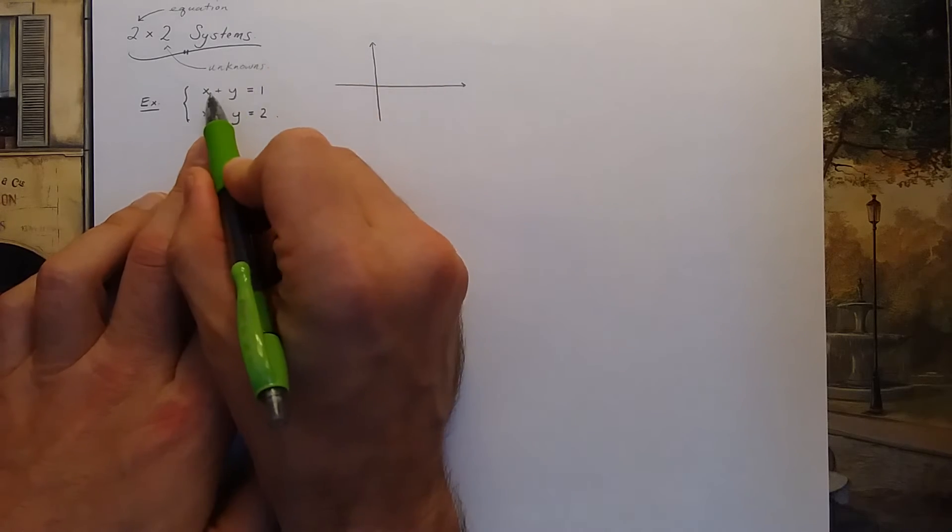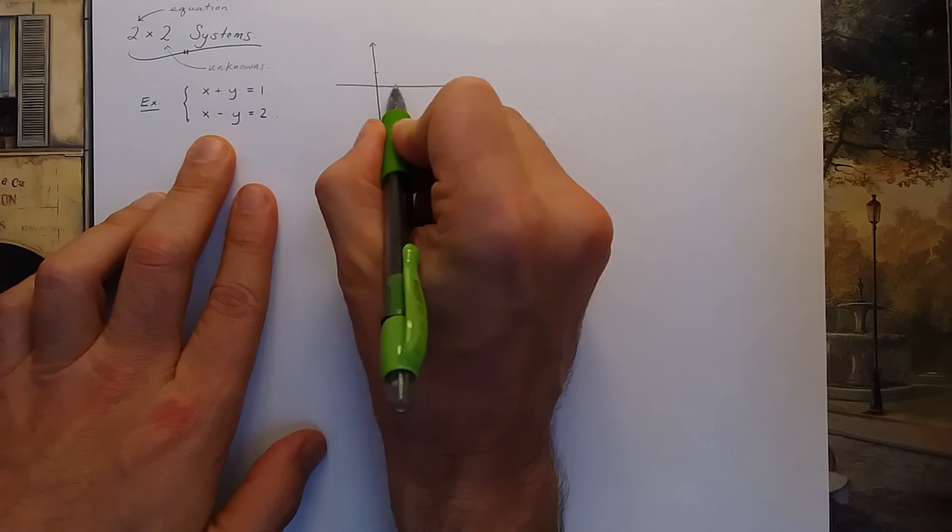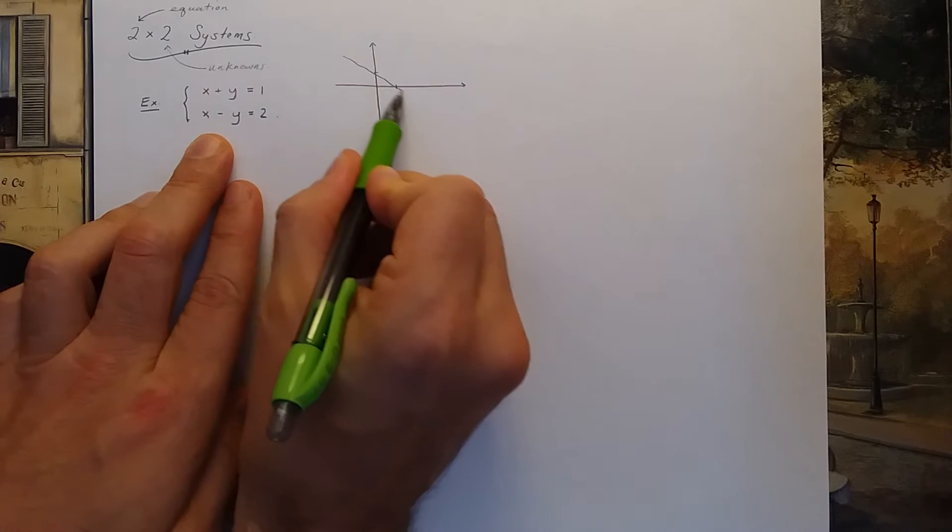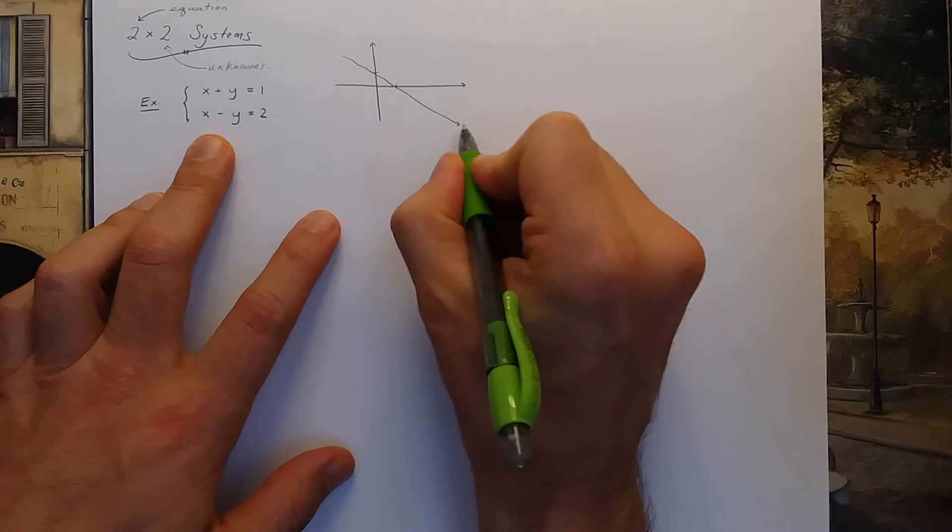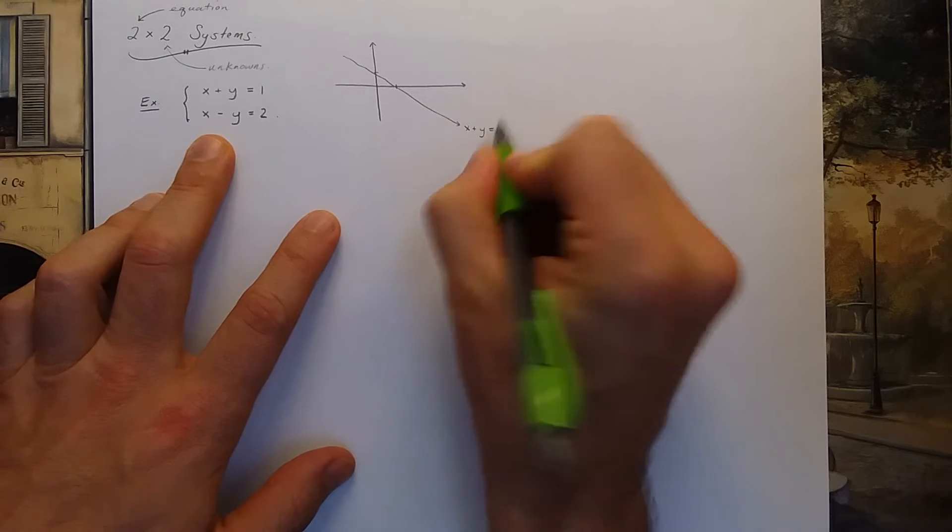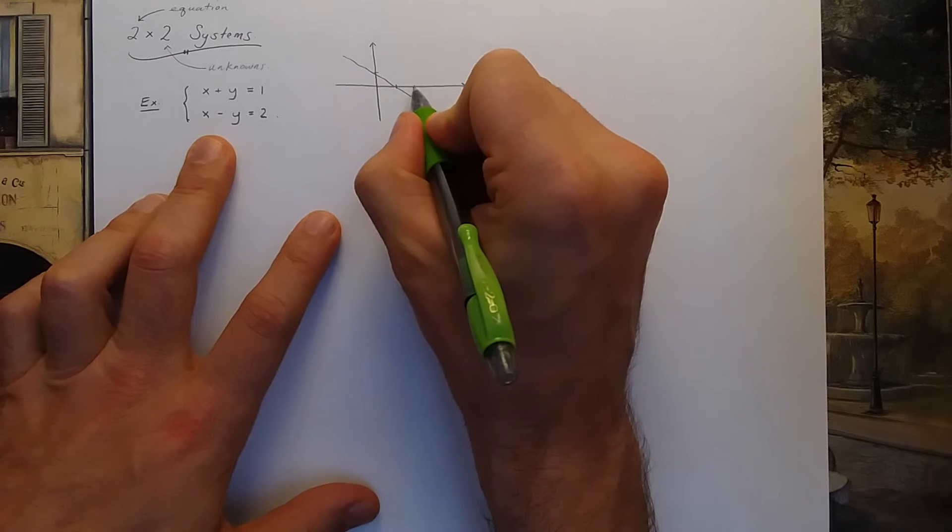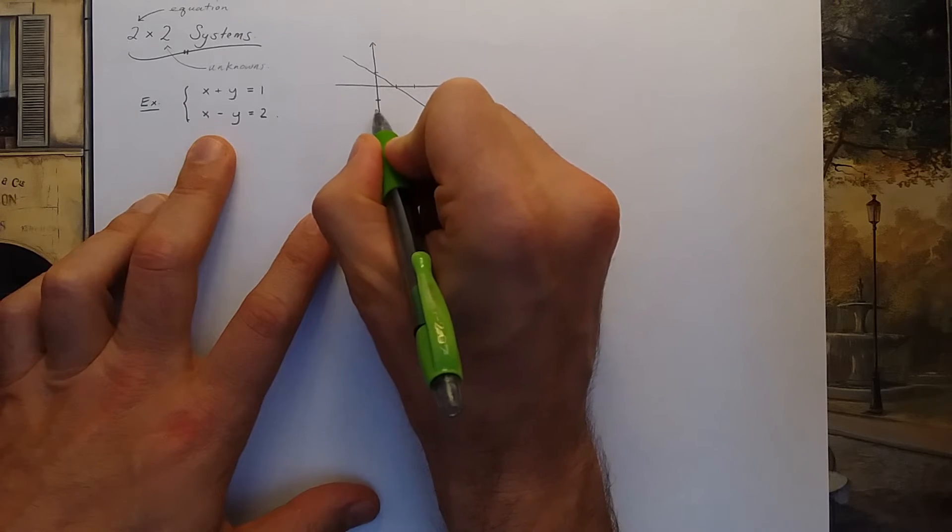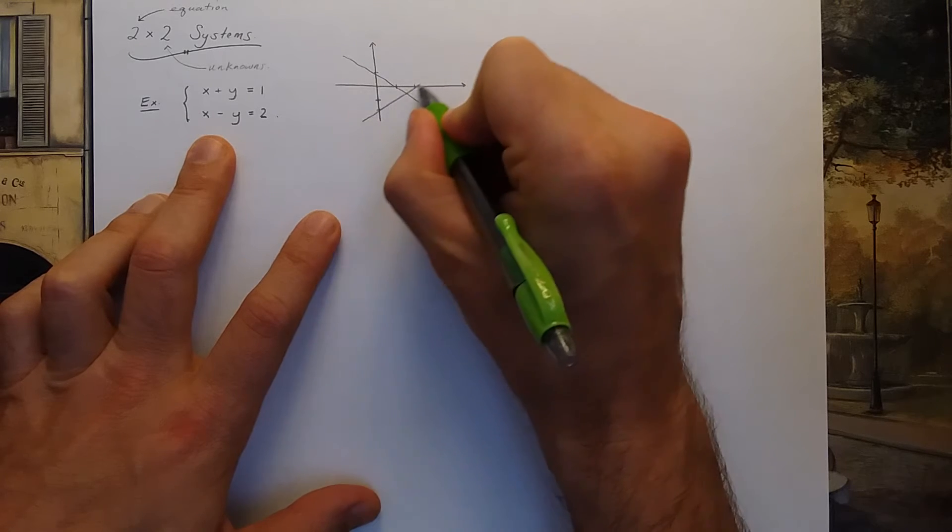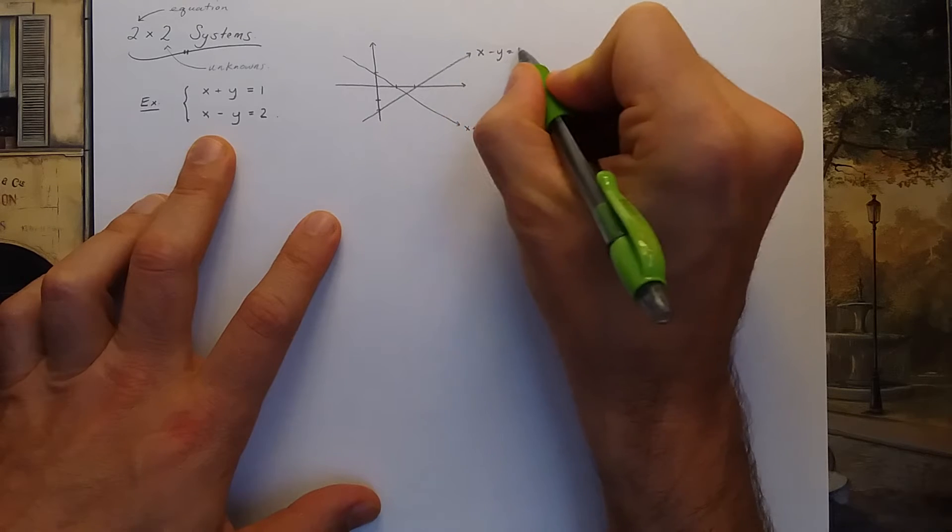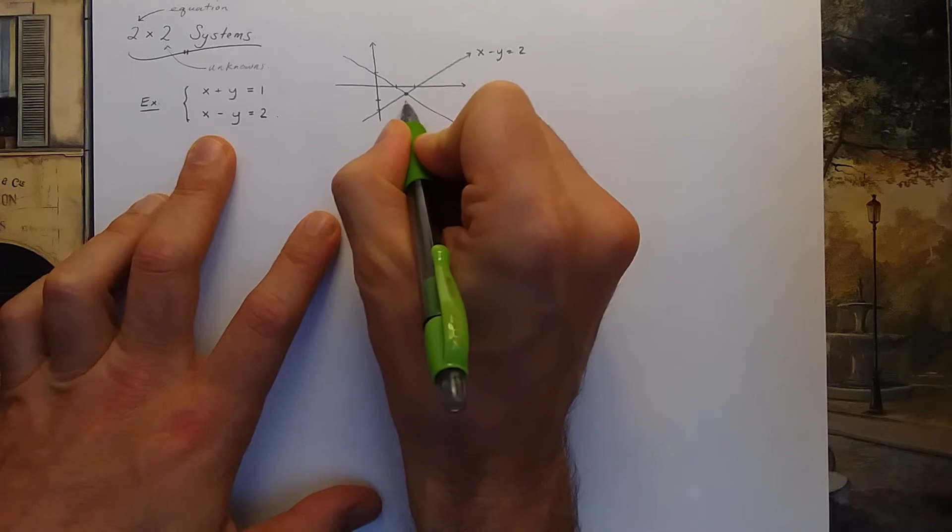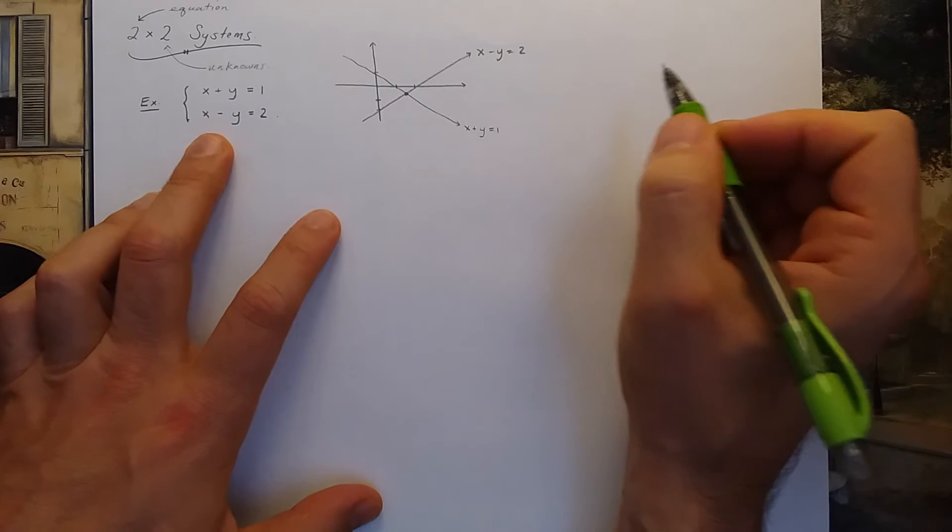So the first line is x plus y equals 1, you can plot that, you get a diagonal line that looks like this. So there's x plus y equals 1, and you could plot x minus y is equal to 2. I believe that will be a line that goes this way. So we're trying to identify this coordinate, this x-y pair.